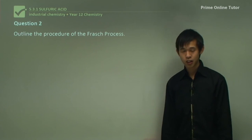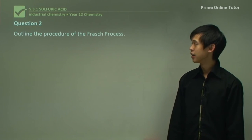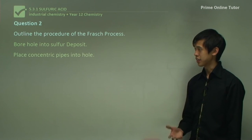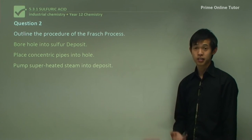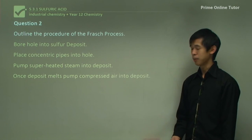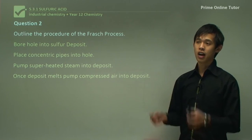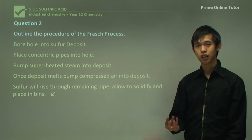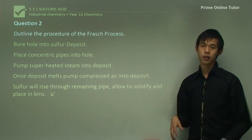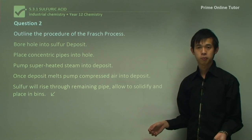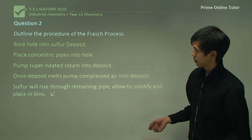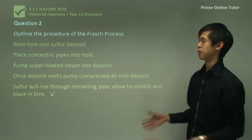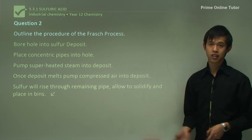Question two: outline the procedure of the Frasch process. First, bore a hole into the sulfur deposit. Then place concentric pipes into the hole. Pump superheated steam into the deposit through one pipe to melt the sulfur. Follow up with compressed air once the sulfur has melted — this pushes the sulfur through the remaining pipe up to the top, where you allow it to solidify and collect it.